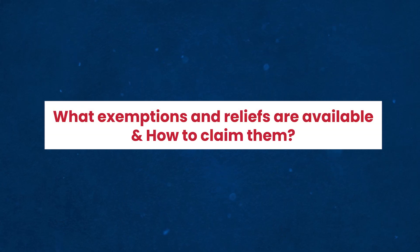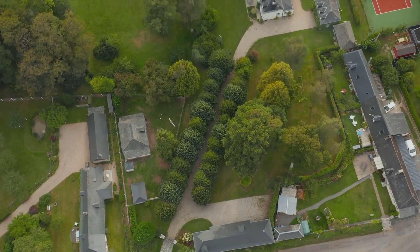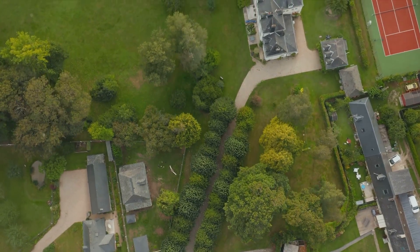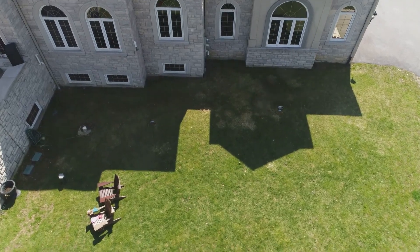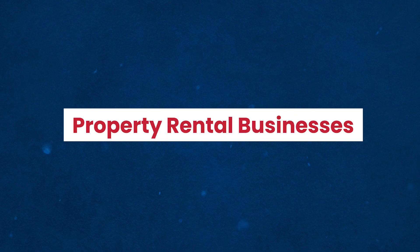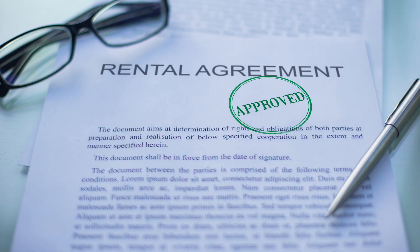What exemptions and reliefs are available and how to claim them? There are some situations where your property may be exempt from the ATED annual charge, or you may be able to claim relief to reduce or eliminate the tax liability. One common exemption is property rental businesses — if you rent out your property to third parties on a commercial basis and do not use the property for your own benefit, you may be exempt from the ATED annual charge.